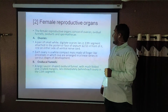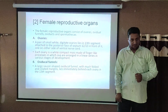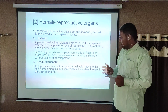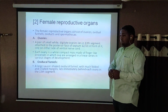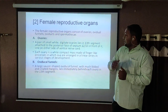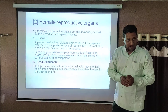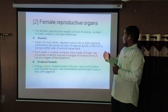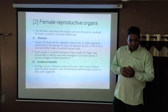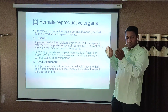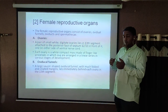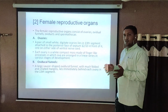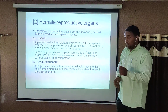Now the female reproductive system. The female reproductive system consists of four main organs: ovaries, oviducal funnel, oviduct, and spermathecae. The spermathecae store sperm, the ovaries form the ova, and the oviducal funnel and oviduct carry the ova from one place to another.